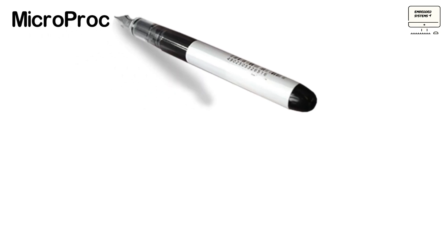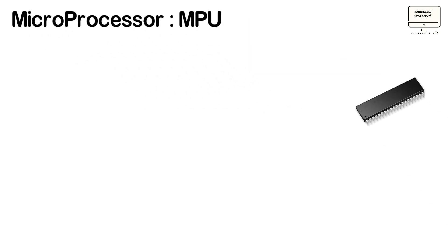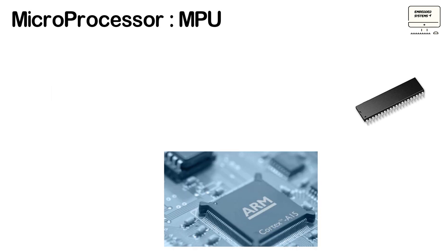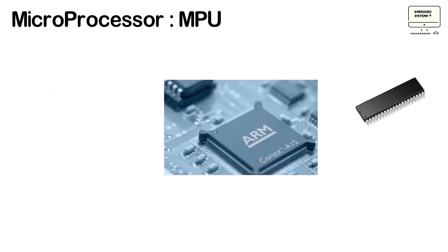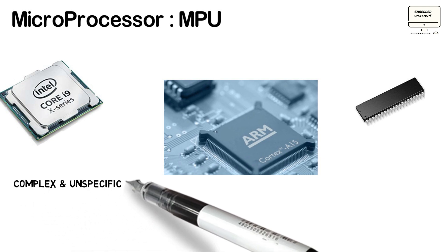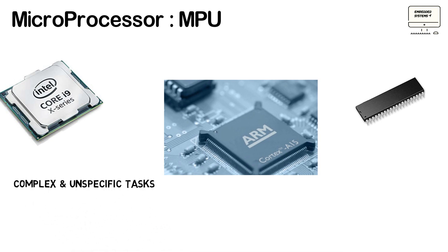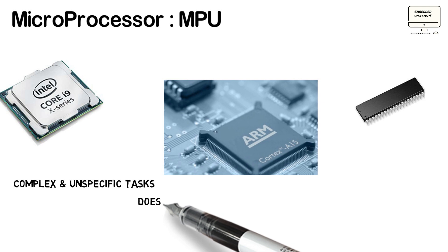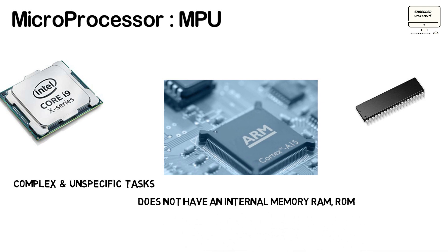A microprocessor is an integrated circuit that has only the CPU — central processing unit — inside it. Unlike microcontrollers, it doesn't have RAM, ROM, and other peripherals. A system designer has to add them externally to make it functional.